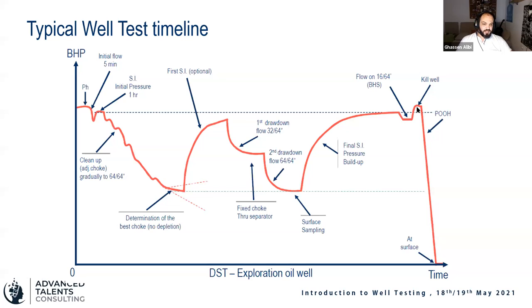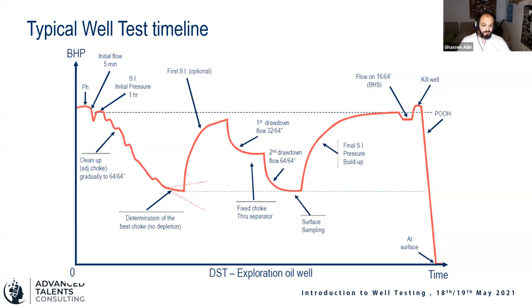At the end we kill the well. Killing the well means injecting heavy liquids into the column that create higher hydrostatic pressure than the reservoir. This pushes all the reservoir fluid back down and allows us to unset the packer and pull out the DST tubing without risk of a well kick. This is the basic timeline for a typical well test operation and DST specifically.